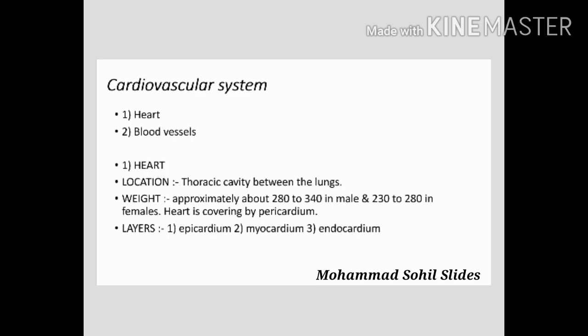First, fibrous pericardium. The fibrous pericardium is cone-shaped and is also known as the superficial pericardium. It is composed of tough, inelastic, dense, irregular connective tissue. The fibrous pericardium prevents over-stretching and anchors the heart in the mediastinum.